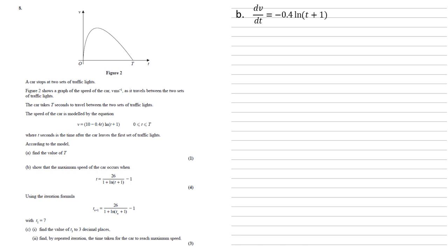So we've got dv by dt is going to be equal to the differential of the first term. So the differential of 10 minus 0.4t is minus 0.4, and we multiply that by the second term, ln t plus 1, and then we add to that the first term, 10 minus 0.4t, times by the differential of the second term. So the differential of ln t plus 1 is 1 over t plus 1, and we're going to set that equal to zero because we want the maximum.